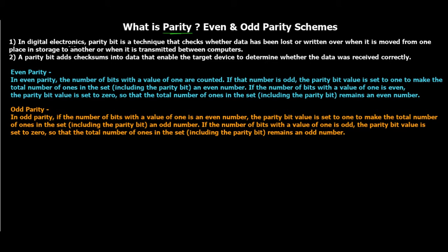In digital electronics, a parity bit is a technique that checks whether data has been lost or written over when it is moved from one place in storage to another, or when it is transmitted between computers. Basically we are performing error detection. A parity bit adds a checksum into the data — one extra value — which enables the target device to determine whether the data was received correctly or not.